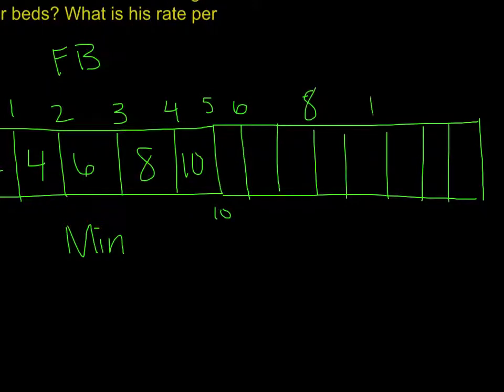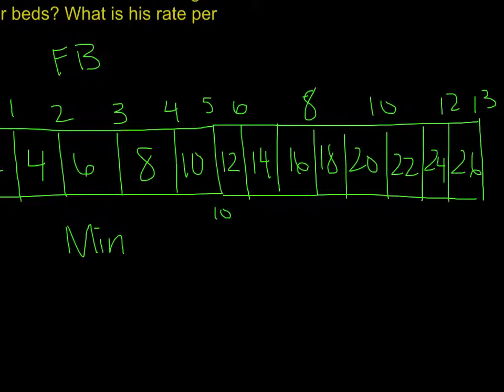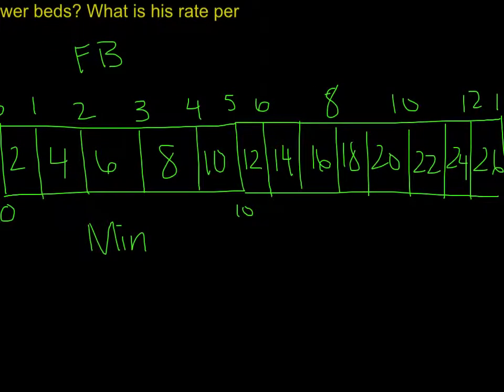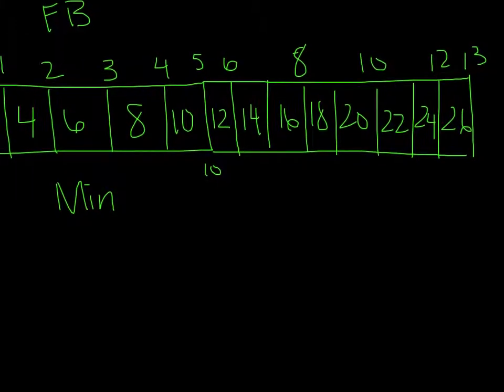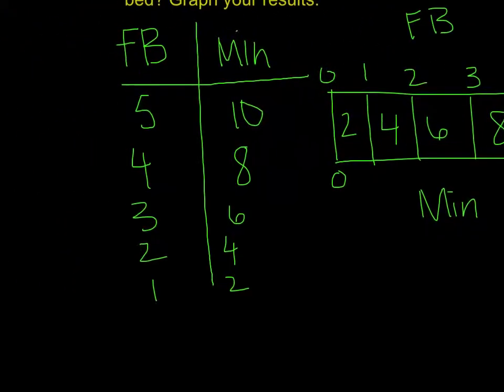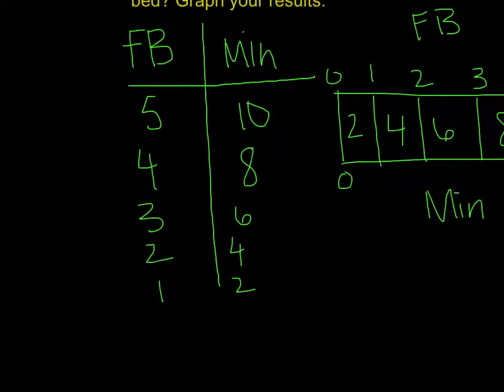I'm just going to skip count here for time. And notice that they're each going up by 2 as far as minutes are concerned. Right here you can see that. So I'm just going to keep up the trend. 12, 14, 16, 18, 20, 22, 24, 26. I could have also multiplied by 2. That would have worked as well. But I can see that after watering 13 flower beds, I would have spent 26 minutes. I can also see right here that it takes 2 minutes per 1 flower bed.